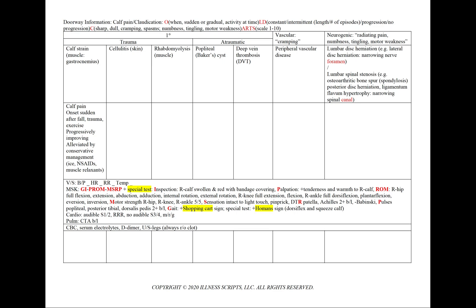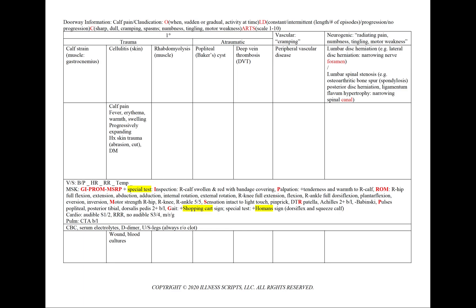We break down primary cases into traumatic or atraumatic causes. In a calf strain involving the gastrocnemius muscle, supporting points include calf pain with a sudden onset after a fall, trauma, or exercise, that is progressively improving as the muscle heals, and is alleviated by conservative management — ice, NSAIDs, or muscle relaxants. In cellulitis, we'll see calf pain; vitals may show fever; and inspection and palpation reveal erythema, warmth, or swelling.